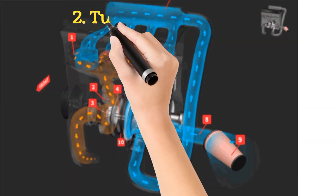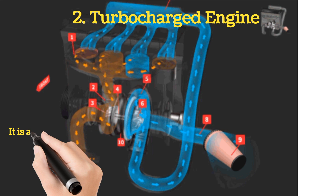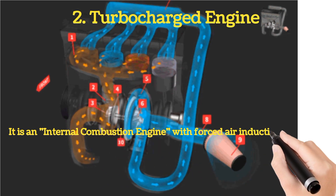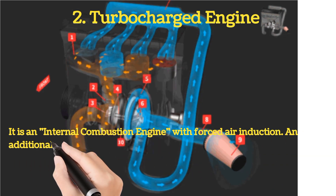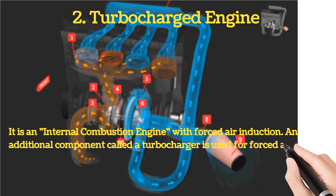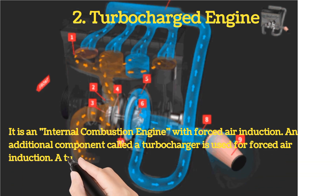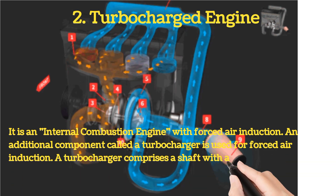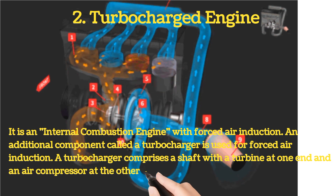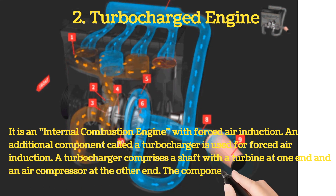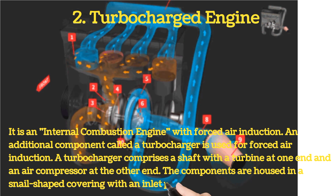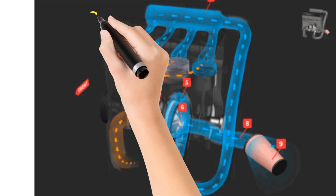Number two: turbocharged engine. It is an internal combustion engine with forced air induction. An additional component called a turbocharger is used for forced air induction. A turbocharger comprises a shaft with a turbine at one end and an air compressor at the other end. The components are housed in a snail-shaped covering with an inlet port.